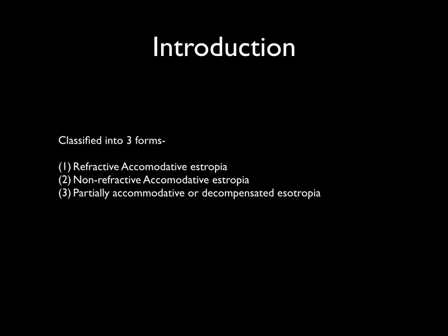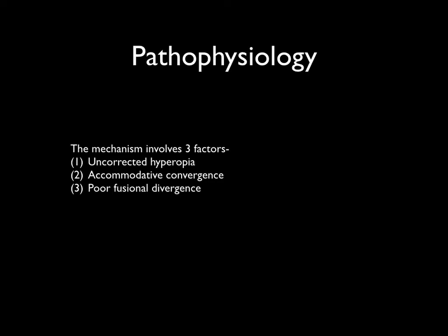Accommodative esotropias can be classified into three types: refractive, non-refractive, and partially accommodative or decompensated esotropia. Accommodative esotropia usually is seen after six months of age, unlike infantile esotropia which develops at an earlier age. They are initially intermittent at onset but become constant over time. They are frequently associated with amblyopia and often could be hereditary as well.